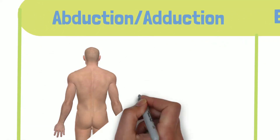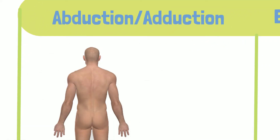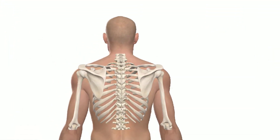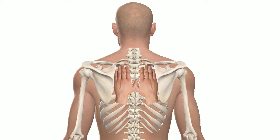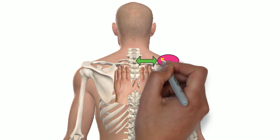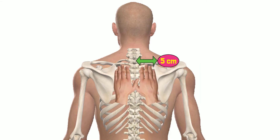Let's take a look at abduction-adduction first. The scapula sits on average five centimeters abducted from the spinal vertebrae. To assess this, place both hands between the scapula and the vertebral column and mark the approximate distance with your hands. The standard width is about five centimeters or four finger widths apart, but remember it may vary depending on individual size and your own hands.